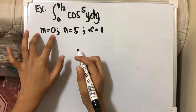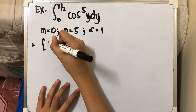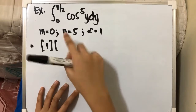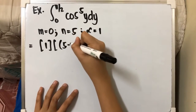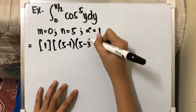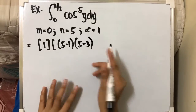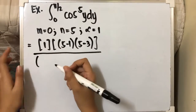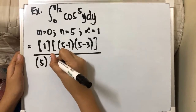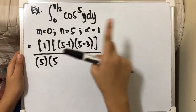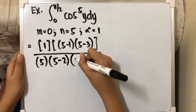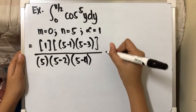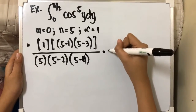Since m equals 0, we just multiply that by 1. Then we proceed with n: we have (5−1)(5−3). Since the result is already 2, there's no need to continue. For the denominator, m plus n is 0 plus 5, which is 5. Then 5 minus 2, then 5 minus 4. Since the result is already 1, we stop there. We multiply this by lambda, which equals 1.